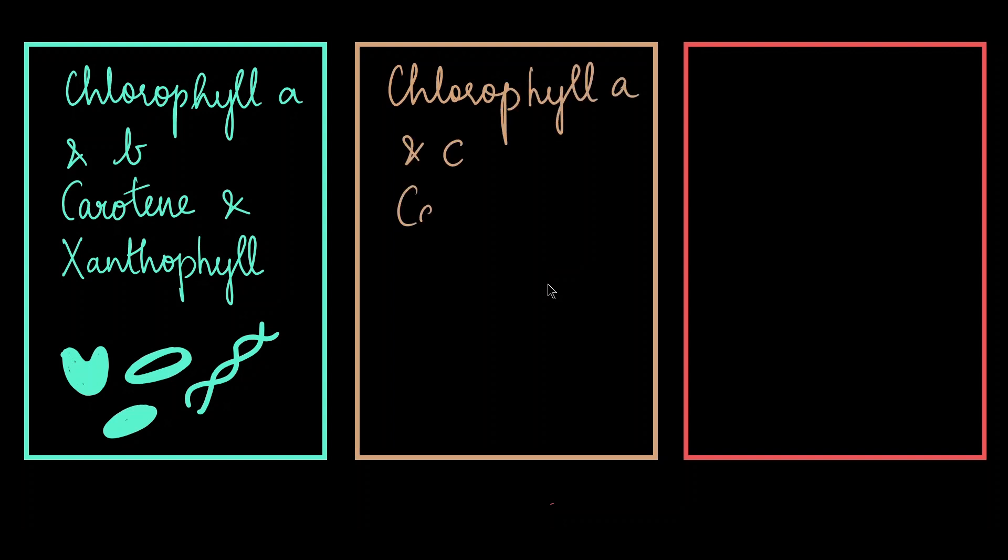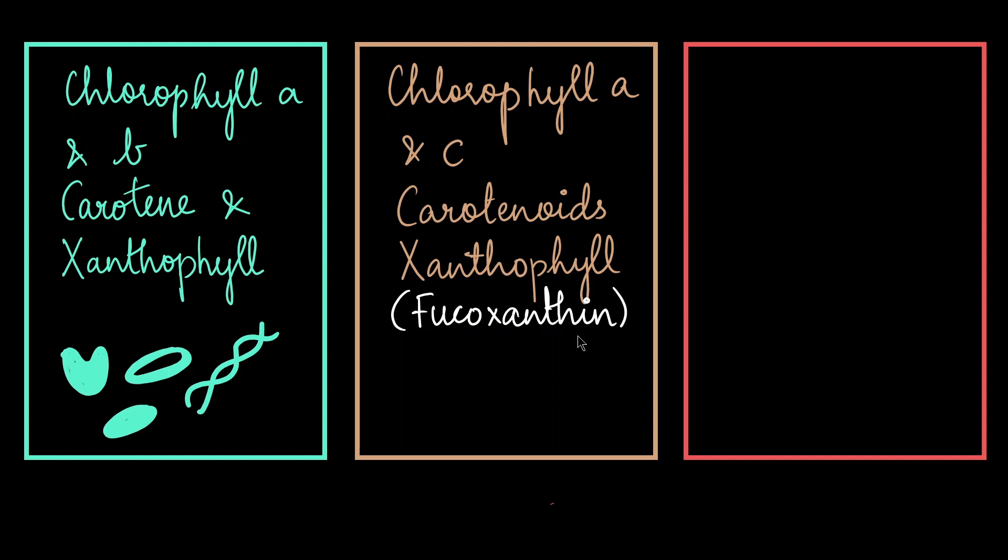Brown algae have chlorophyll a and c, carotenoids and a very specific type of xanthophyll called as fucoxanthin. It is olive green to brown color and is responsible for the brown pigmentation.